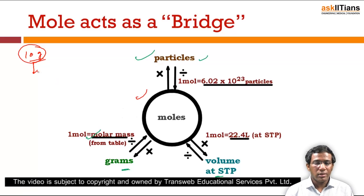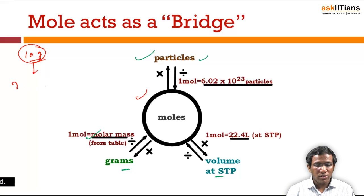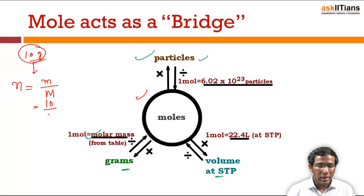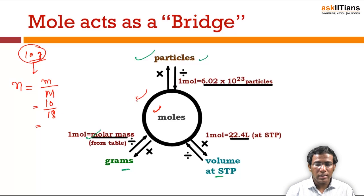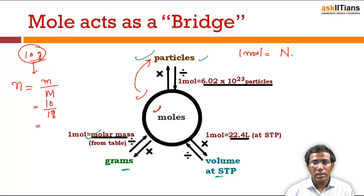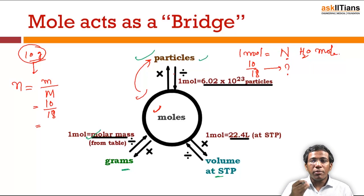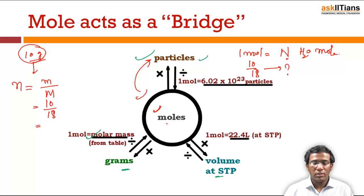First, calculate how many moles are in 10 grams of water. The number of moles is defined as mass divided by molecular mass. Mass given is 10 grams; molecular mass of water is 18 grams/mol. So number of moles = 10/18. Since one mole of water contains Avogadro's number of water molecules, 10/18 moles contains (10/18) × Avogadro's number of molecules. So we can find the number of water molecules from the mass — the mole is acting as the bridge.